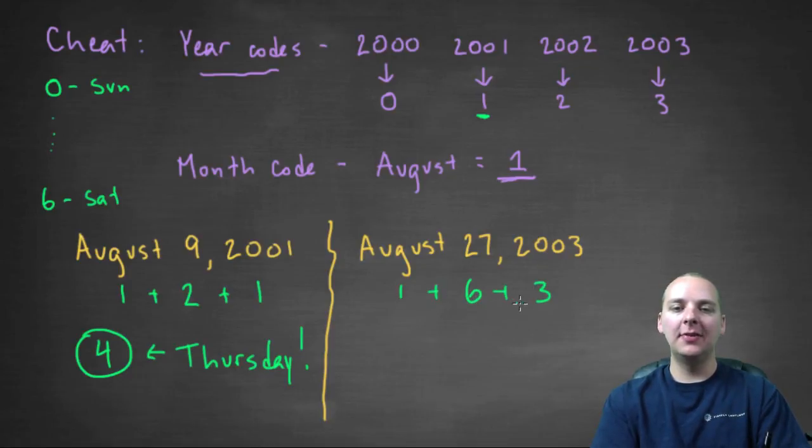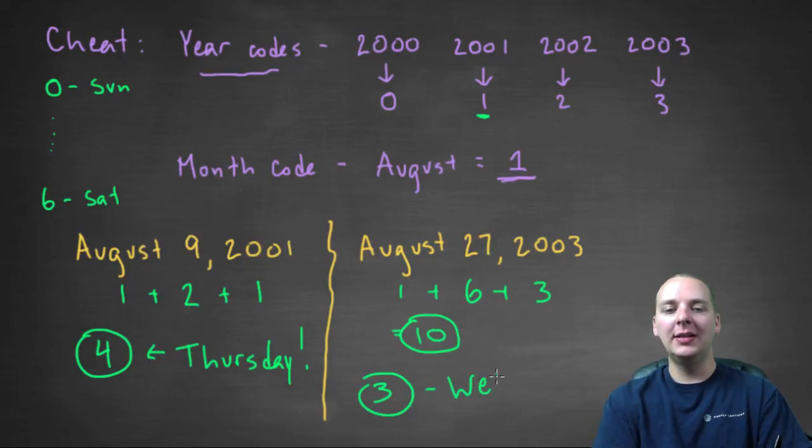One and six make seven, seven and three make ten. Now, ten isn't between zero and six, but you can actually take this number modulo seven as well. So, modulo seven, this is equivalent to three, and three would be a Wednesday.